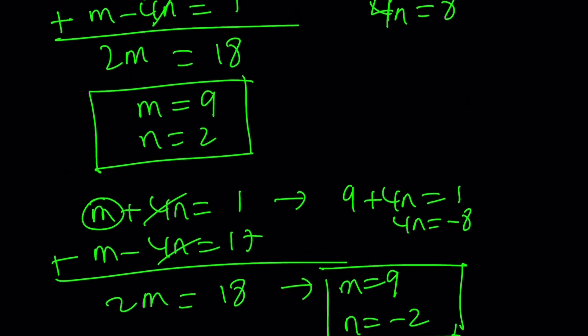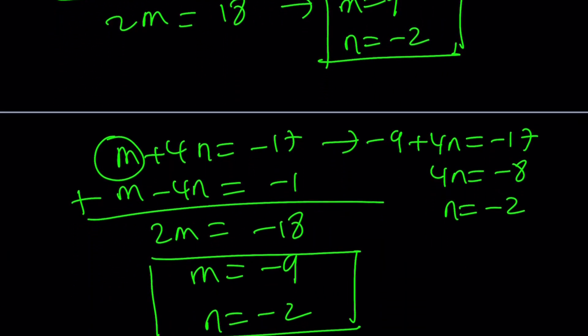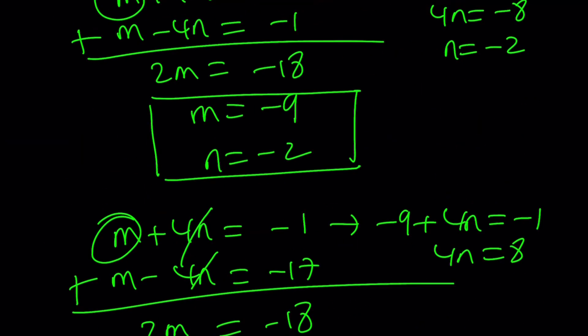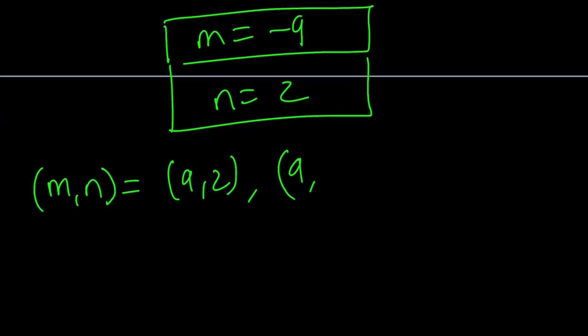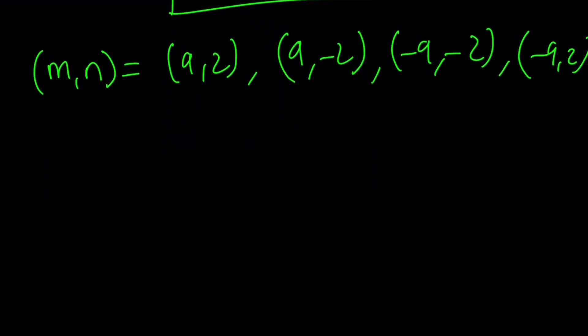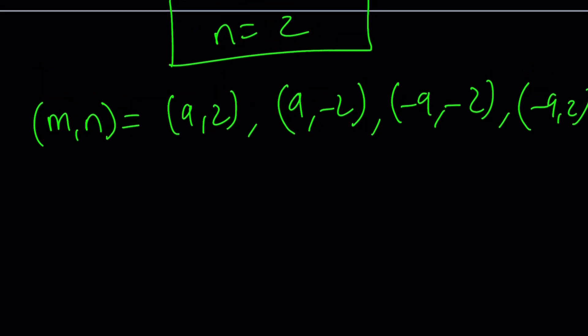So here's how this works. m can be plus minus 9, n can be plus minus 2, and that's going to basically give us the 4 cases. So we can write the mn values as (9, 2), or (9, negative 2), and then we have (negative 9, negative 2), and (negative 9, positive 2). Obviously, you could also write it as plus minus 9, plus minus 2, but you have to be careful which one goes with which, but in this case, it's basically everything.